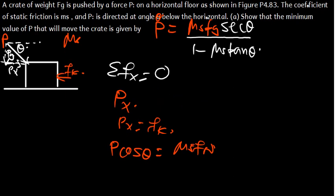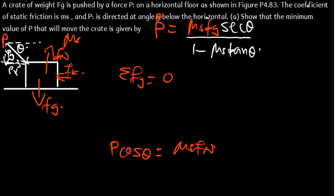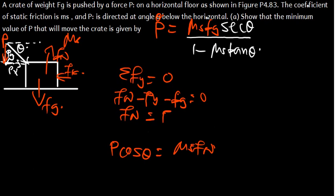Now we need to find the normal force. The summation of all forces in the y-direction is supposed to give us zero. We have the normal force directed upward, minus Py which is directed downward, minus Fg the weight force, all equal to zero. So the normal force is going to be equal to Py plus Fg.